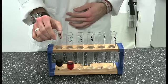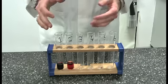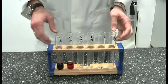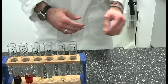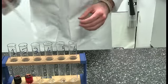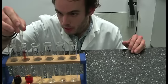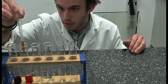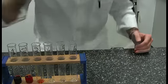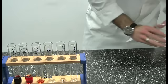So now that we have a sample of stock solution and a sample of 10 to the minus one diluted solution, we can continue with the experiment. Following the same process, you're going to grab a clean pipette once again, measure out one milliliter of your solution from test tube two at eye level, and add into test tube three.